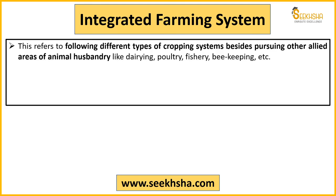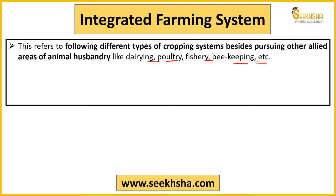Integrated farming is another cropping pattern where cropping is integrated with animal husbandry activities such as dairy, poultry, fishery, and bee-keeping. This integrated farming system can also come under cropping pattern. It basically maximizes returns and resource use.